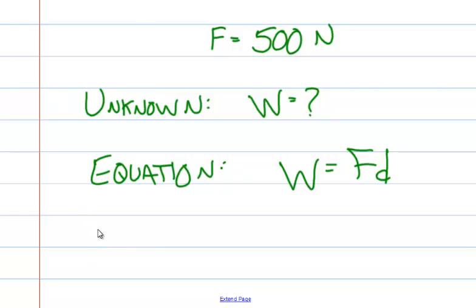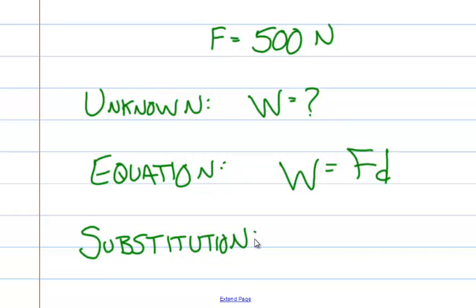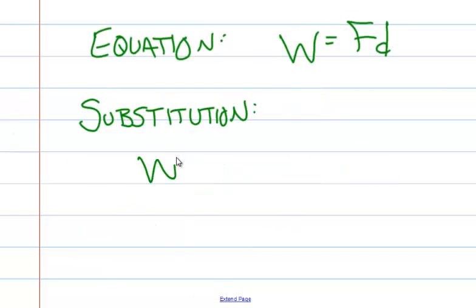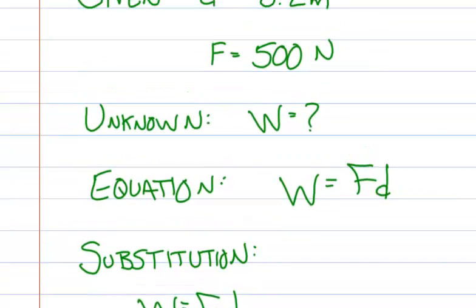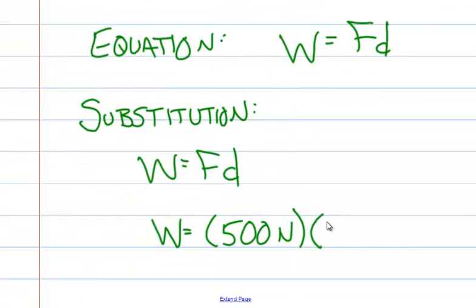Now we're going to substitute. Work is equal to force times distance. Force is 500 newtons. Distance, as you recall from our given, is 3.2 meters.